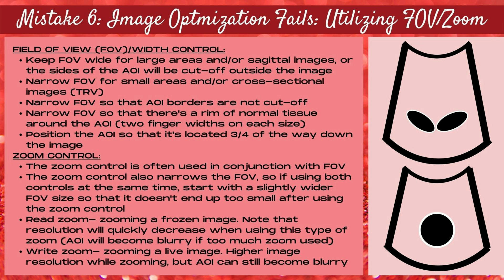There are two types of zoom. Read zoom magnifies existing pixels and is used when zooming a frozen image — resolution decreases quickly and the area of interest becomes blurry if too much is used. Write zoom rewrites existing pixels when zooming a live image, providing higher resolution, though too much can still cause blur. The two main issues with zoom are: not realizing it narrows your field of view, or using too much zoom making the image non-diagnostic.